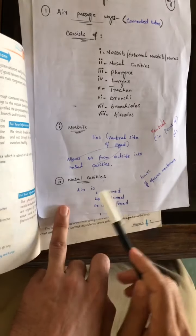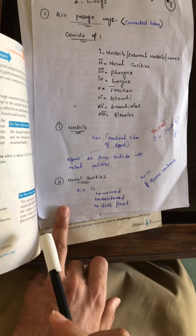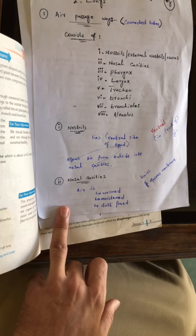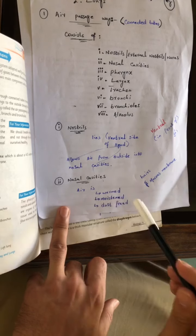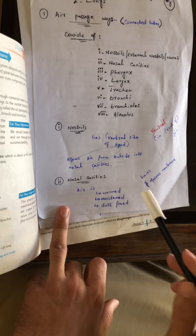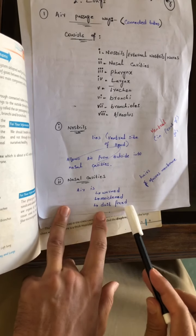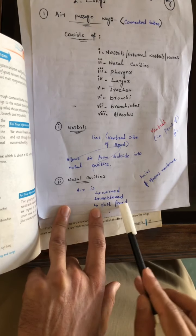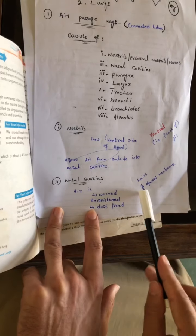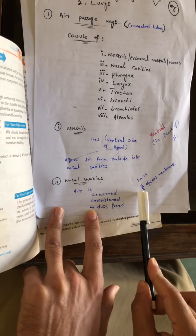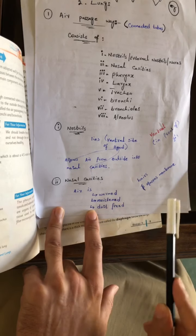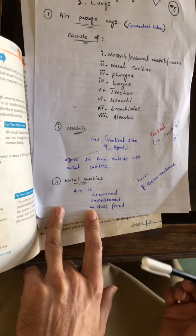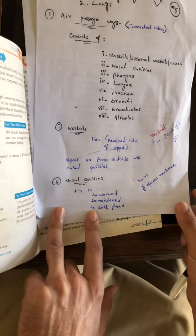The second part is the nasal cavities. The nasal cavities are channels divided by two walls. Here, when the air comes from the environment inside the nose, it is warmed, moistened, and filtered. They have the mucous membrane which secretes mucous, and when the air comes through, particles are trapped.